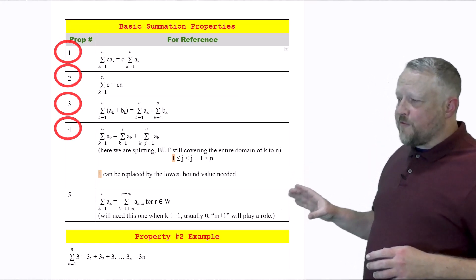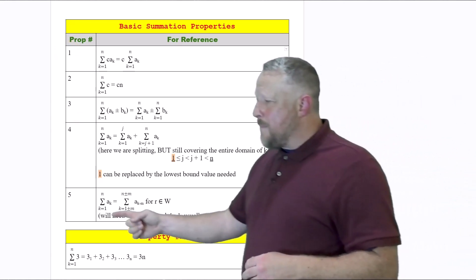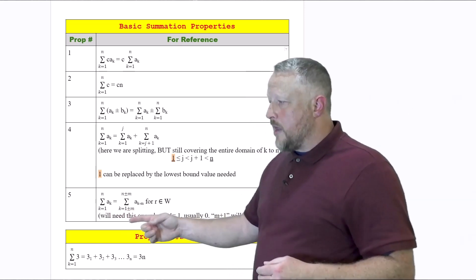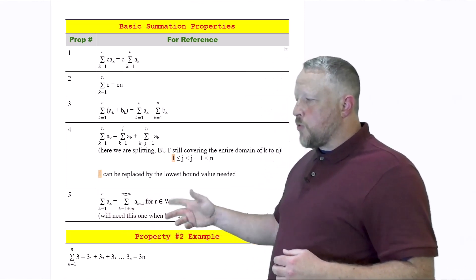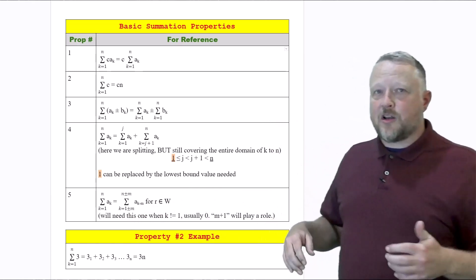Property number five, by the way, is one of the more difficult ones, only because if we happen to start at a different value of K, not one, then we can use this property to help us dig out of that and start from another value instead of just one.